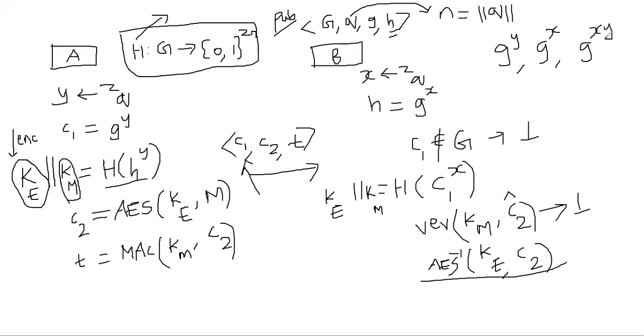So if somebody modifies C1, what will happen? Let's say they modify C1. Well, in that case, the key they will get out is wrong because the H function will behave like a random function. So they're going to use a wrong key and a wrong MAC. So the MAC will very likely fail. So MAC will fail, then you will not go ahead and decrypt.